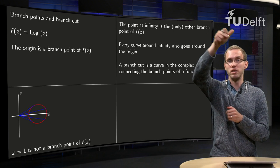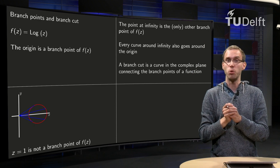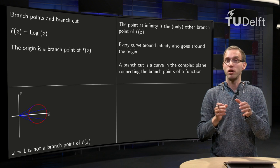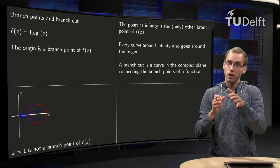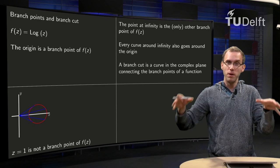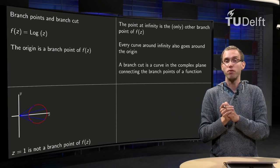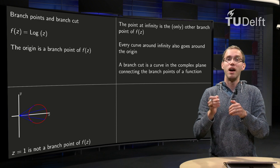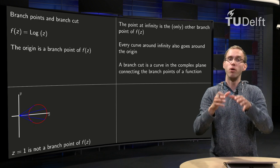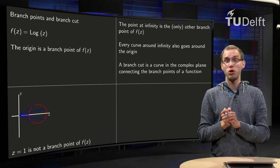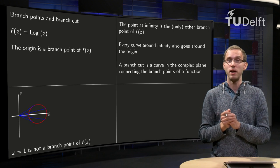So if you circle the point at infinity in some way, that means circling in the complex plane in a very big circle around the origin. And whichever curve or whichever circle you take around the point at infinity, will always be mapped to a circle around the origin in the complex plane.